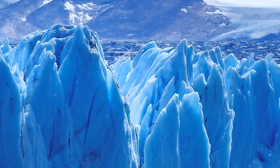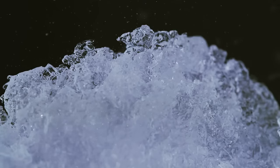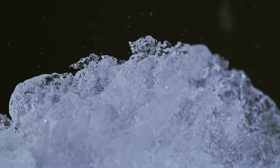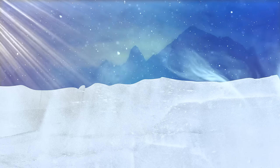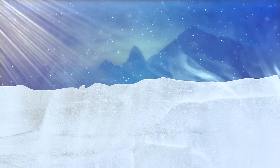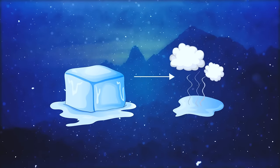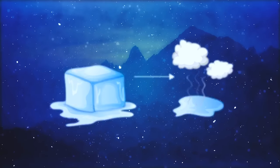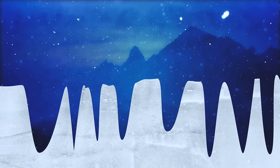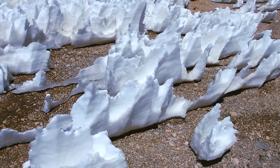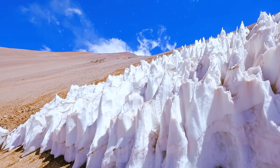Such jagged structures form due to a process called sublimation. It's a bit similar to melting, but in this case the sun turns the snow directly into vapor without melting it first. In other words, the ice skips the liquid stage and goes from its solid form to gas. Curved areas of the surface heat up and sublimate faster than others, forming dents. That's how penitentes get formed, and that's why they lean in the direction of the sun's rays.